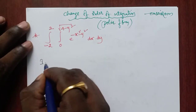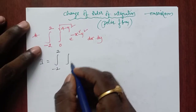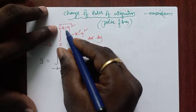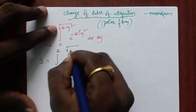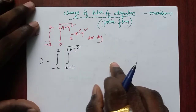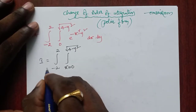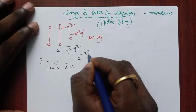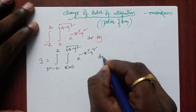So what is our integration? The first integration consists of variable bounds in terms of y. The bounds for x are 0 to root over 4 minus y square, and y goes from minus 2 to 2. Since the inner integral has x boundaries, we need to integrate with respect to x first and then with respect to y.